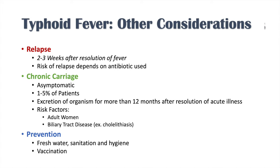To summarize the other considerations of typhoid fever: first, we need to worry about relapse — even after treatment, we may not have picked the right antibiotic. Second, chronic carriage is an asymptomatic state where the individual continues excreting Salmonella typhi or paratyphi into their environment for extended periods — this is what happened with Typhoid Mary. Risk factors for chronic carriage include adult women and those with biliary tract disease, especially cholelithiasis, since gallstones act as a source for the bacteria. Finally, prevention through fresh water, sanitation, hygiene, and vaccination is the most important takeaway.